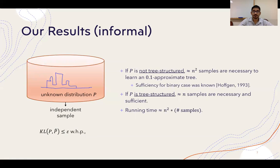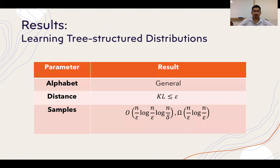Our results are stated informally as follows. First, we show that if p is not tree-structured, then any algorithm for recovering an approximate tree would need something like n-squared samples. The sufficiency of this n-squared bound for the binary case was known previously. We also show that if p is tree-structured, then we can go linear in the number of samples, which is both necessary and sufficient, as we show in this paper. The running time in both cases is n-squared times the number of samples, from the maximum spanning tree construction. Our results hold for any general alphabet, though we focus on the Boolean alphabet for simplicity.